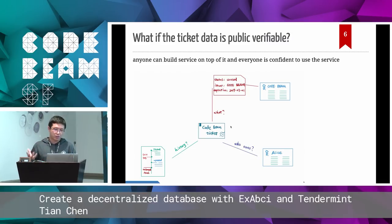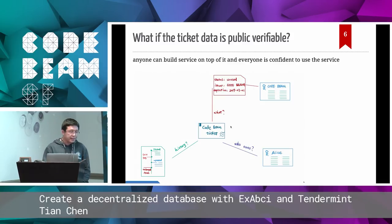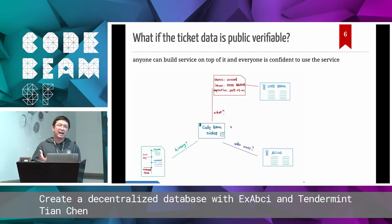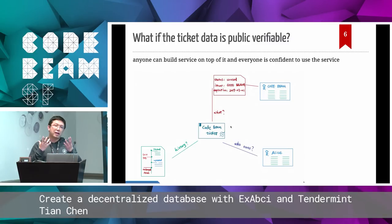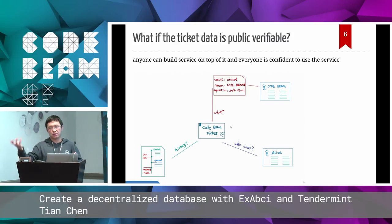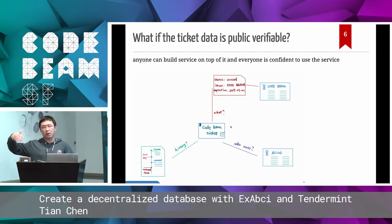The next part of this talk is mainly about how we can build a layered service to achieve this capability of public verifiability. We know that with existing database technologies, we cannot easily achieve this. Say we want to use Postgres — even if I share my entire Postgres instance on the internet and everyone else can replicate data from it, they still cannot trust the data, because that data was written by me. I can write whatever data I want into that database, and you just blindly synchronize it. So we need to find a way to make sure that from the very beginning, the data is verifiable, and all along the way until the final state, the data is still verifiable.